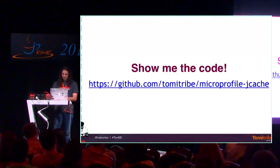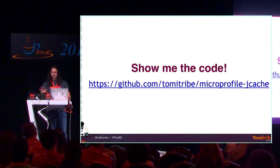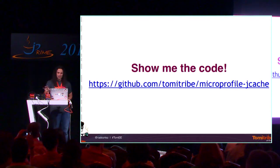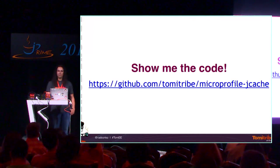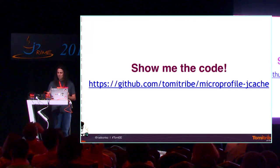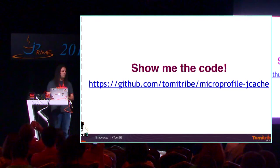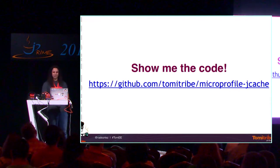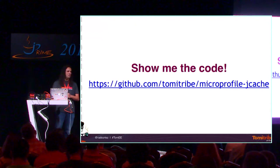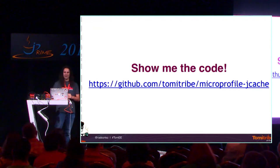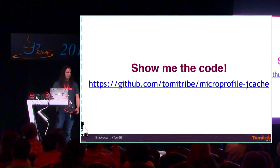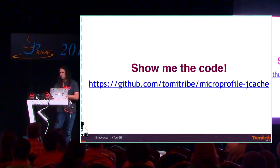Let's move back to the presentation. All the setup you see here — all the code I've shown, the Pi configuration, the Ansible scripts, and the Docker images — you can find in the microprofile-jcache GitHub repo. If you feel like building something like this and something doesn't work, please let me know and I'll be happy to fix it or help.